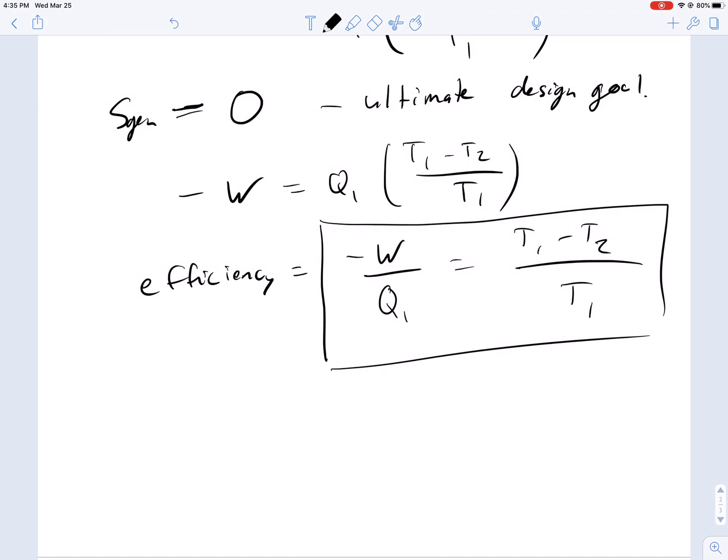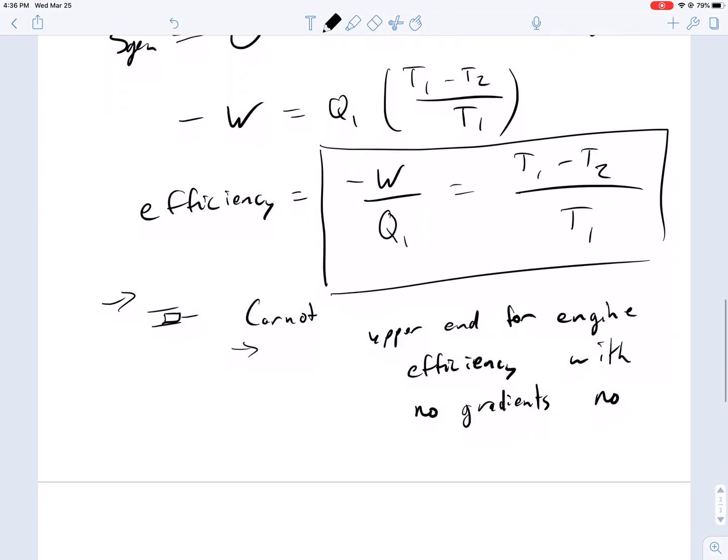And the first theoretical engine with a piston device to look at this is called the Carnot engine. Sometimes I have to call it the Carnot engine because you cannot reach this perfect efficiency. But this becomes the upper end for engine efficiency, with no gradients of temperature and no friction of that device.